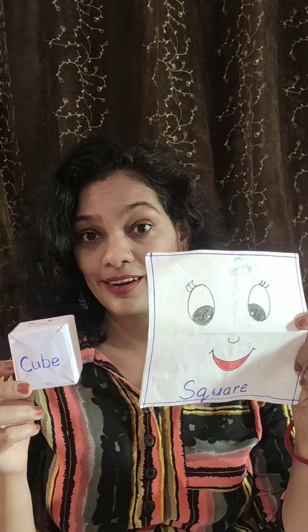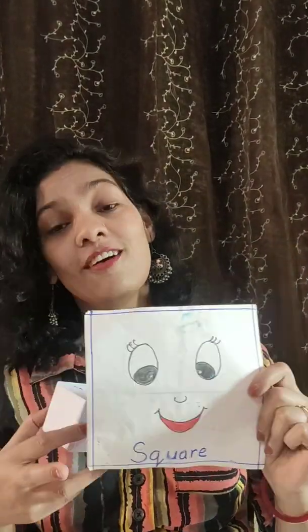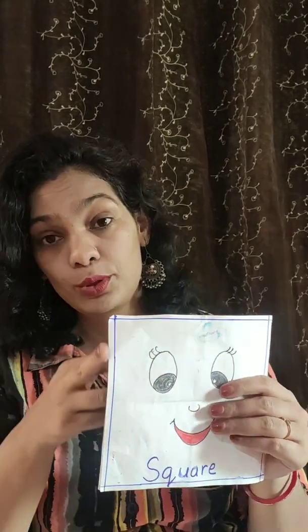The first shape is a cube. This is a 3D shape. From the front it looks like a square, but a square is a 2D shape — it has only length and breadth and nothing behind. But a cube is a 3D shape, a three dimensional shape. It has length, breadth, and width. That's why this is a 3D shape.